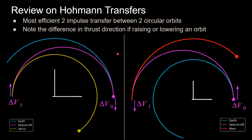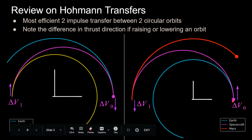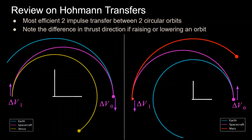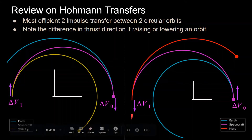To raise the orbit is the opposite idea. When departing from Earth and needing to get into Mars orbit, the spacecraft must increase its heliocentric velocity, and the thrust must be in the direction of the velocity vector. That's shown here, where initially the spacecraft at Earth needs to increase its velocity — thrust in the velocity direction to raise its orbit. And once again, when it gets to Mars, it needs to thrust in the direction of its velocity again to raise the orbit to match Mars.